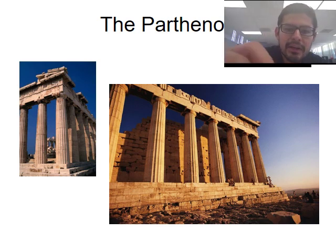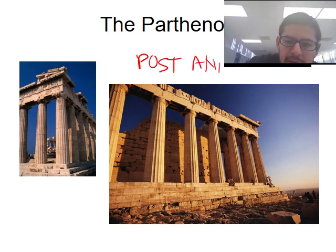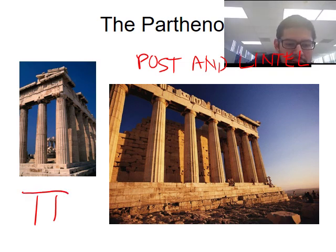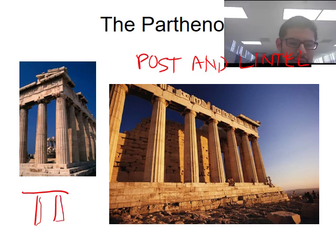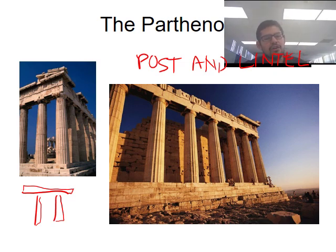Another key term to note is post and lintel. This is the original idea: posts are columns supporting something above them, and the lintel is what they're supporting. Something like the Parthenon is a great example of post and lintel — columns basically holding up the structure above. This term describes any time columns are holding up a structure above them.